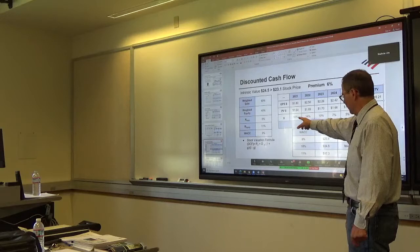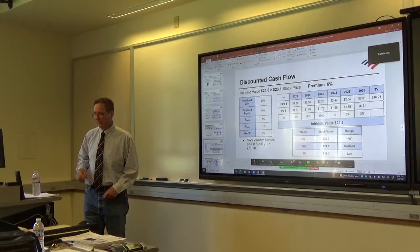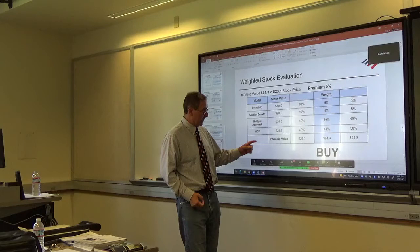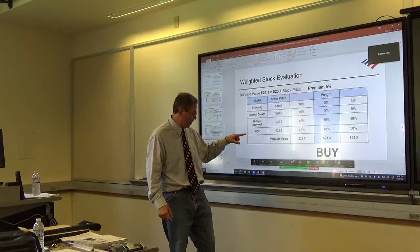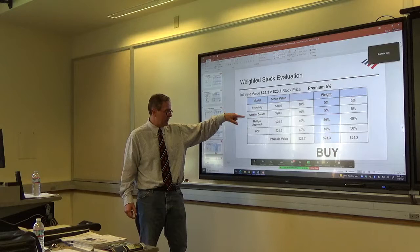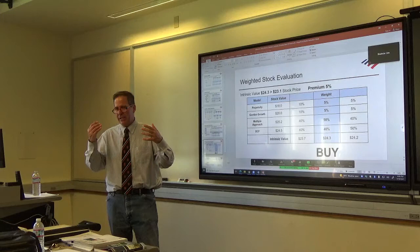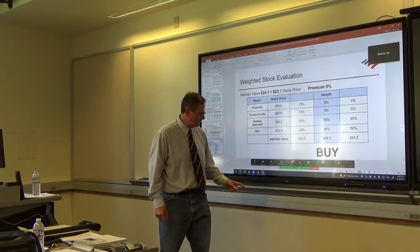We had to go back and project out what the earnings per share growth rates were going to be over the six years to use the DCF. Then what we did was we ran three scenarios, weighting scenarios on the individual methodologies. We overweighted the multiple approach and the DCF, because we knew that perpetuity and Gordon growth were too simplistic, and that most equity analysts will use the multiple approach of the DCF to come up with their intrinsic values.